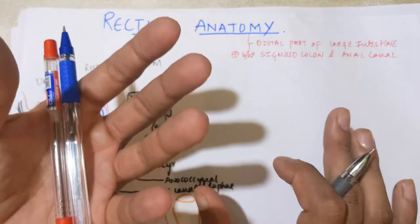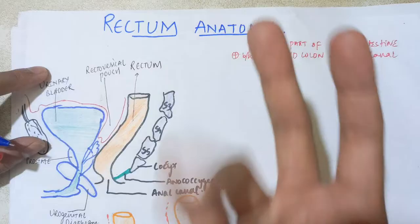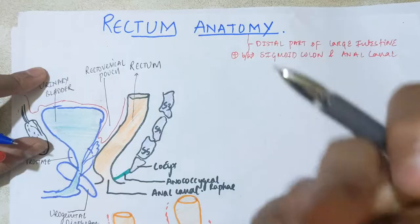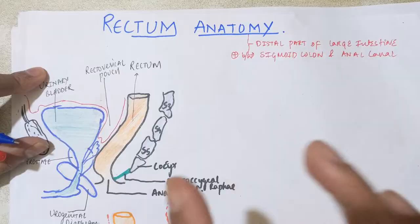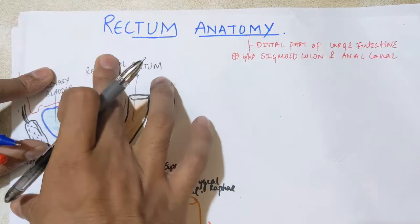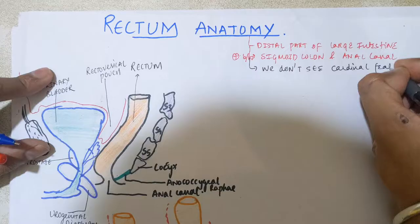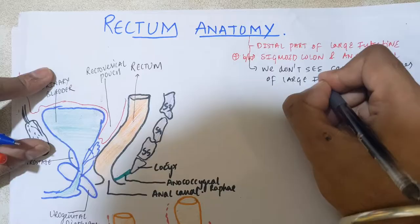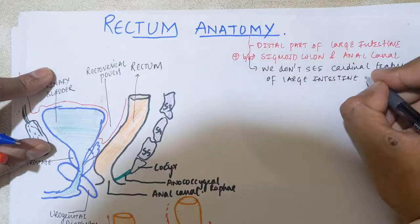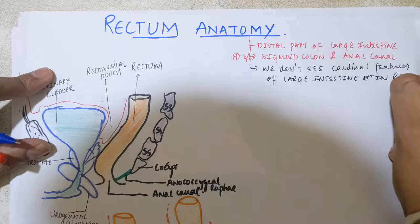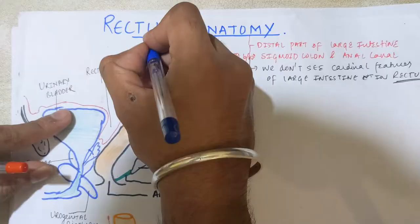Comparing with the rest of the large intestine, the cardinal features we discussed in the first video — the three important distinguishing features: taenia coli muscles, epiploic appendages, and haustra — all three are not present in the rectum. So we do not see the cardinal features of the large intestine in the rectum. This is one of the most important distinguishing points.